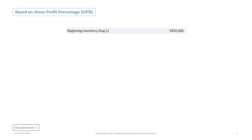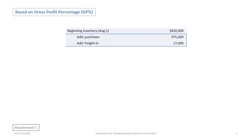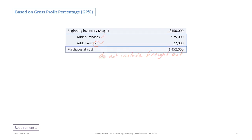We begin with our beginning inventory of $450,000 collected from the data presented. Then we add in any purchases and any freight in. If you have a question that has freight out, do not include it because that's related to sales. We can then create a subtotal of beginning inventory plus purchases and freight in, which gives us purchases at cost.